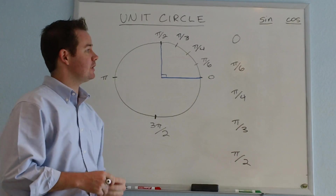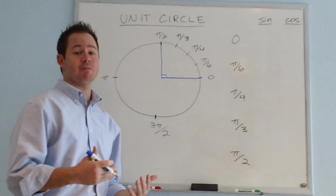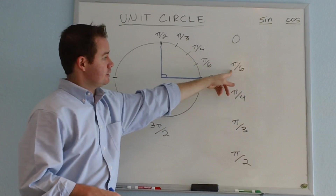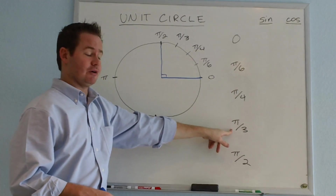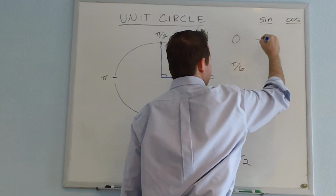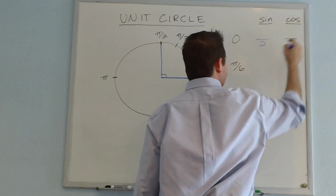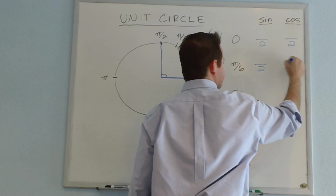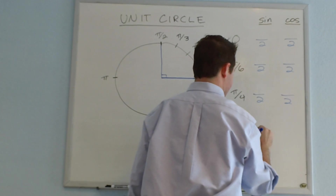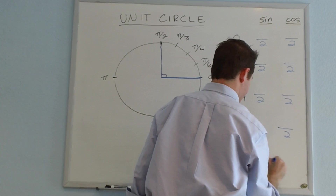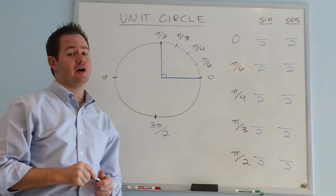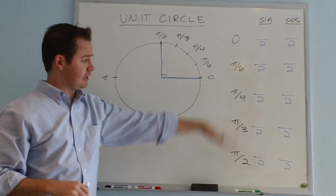For our sine and cosine values, the easiest way to memorize what coordinate points correspond to the sine of 0, pi over 6, pi over 4, pi over 3, and pi over 2 is to use this little trick. First, we put everything over 2 in each location. Now some of these we can reduce later on, but for right now we're going to start by listing everything over 2.